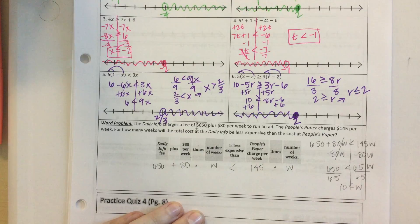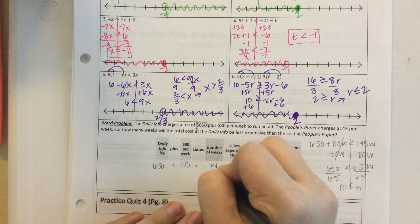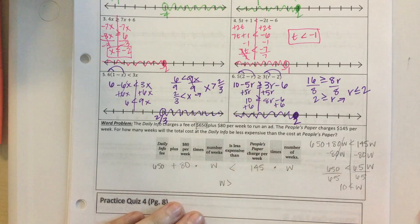So remember, I want the variable on the left, so this really is W is greater than $10.